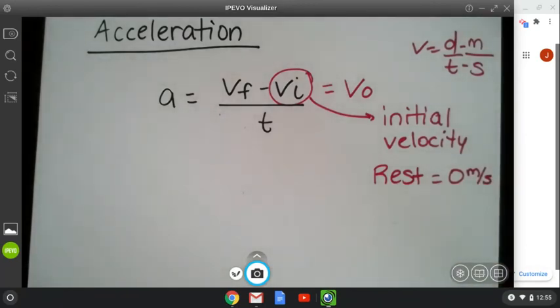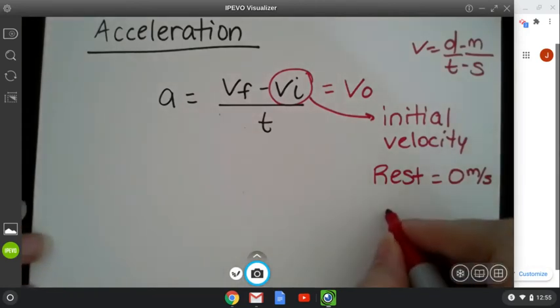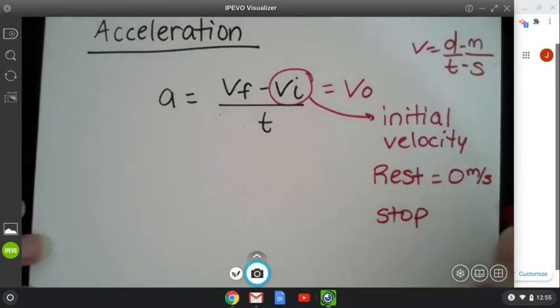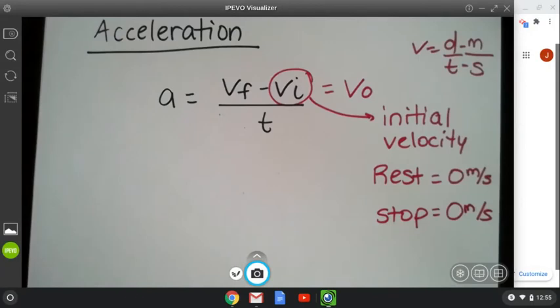So again, your initial velocity, a lot of the time will be zero. Well, what if you have a problem where you want to know how fast is a ball rolling before it stops? If something is going to stop, it's no longer moving, and it's also going to be zero meters per second. So those are important concepts to understand.